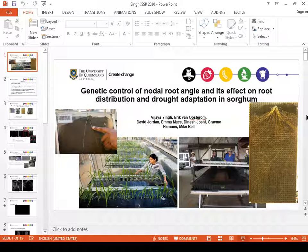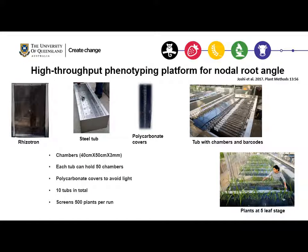We can grow 500 entries per run and we harvest the plants at five-leaf stage.